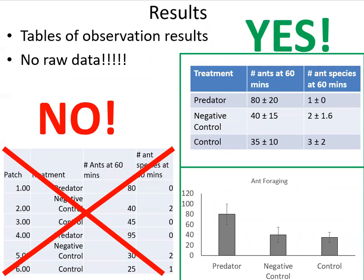Do not put raw data in a table — do not show any raw data at all. You want something that is descriptive and meaningful. Do not have tables of observation data; this can be said in plain text. If you do use a table to show treatments with number of ants per minute, do include standard deviations and means as well.